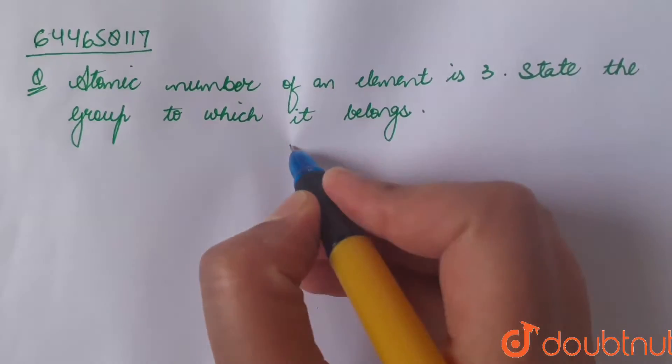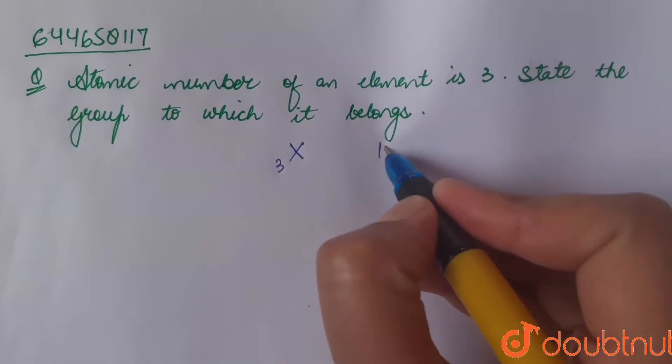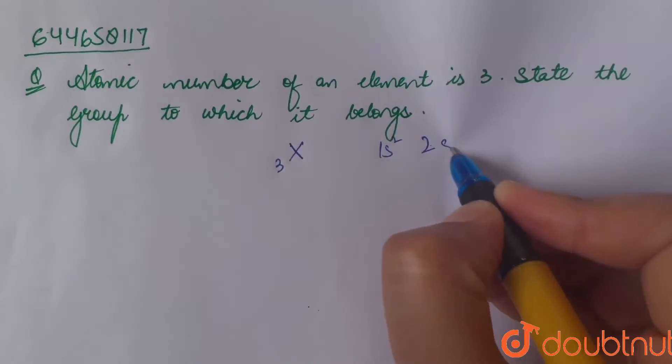Let the element be X. So here, X is atomic number 3. Let's write the configuration of this. This is 1s², 2s¹.